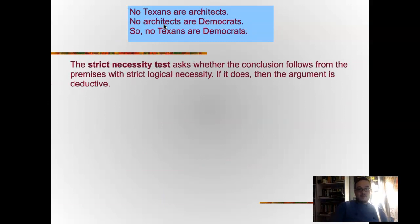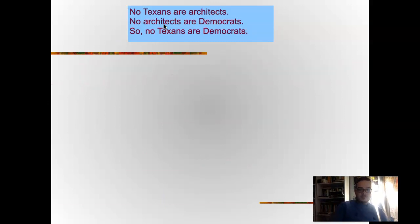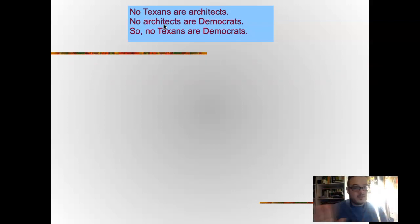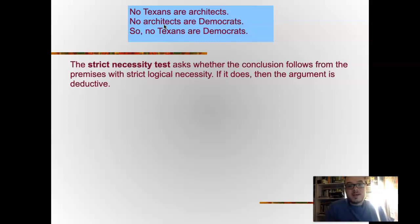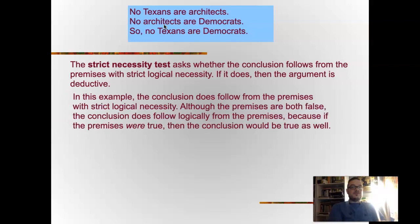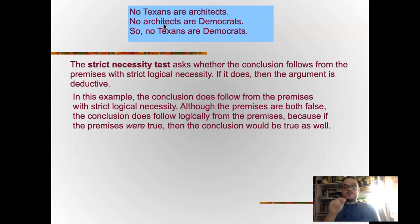Consider: no Texans are architects, no architects are Democrats, so no Texans are Democrats. Before we analyze this, note that this argument is not actually true — that is not the important thing here. The strict necessity test asks whether the conclusion follows from the premises with strict logical necessity. If it does, the argument is deductive. In this example, the conclusion does follow from the premises with strict logical necessity. Although the premises are both false, if the premises were true, the conclusion would be true as well.